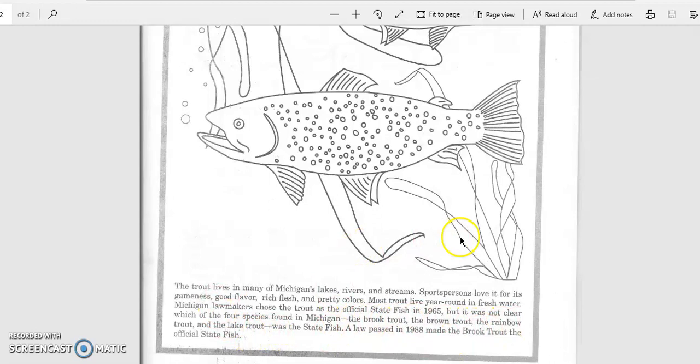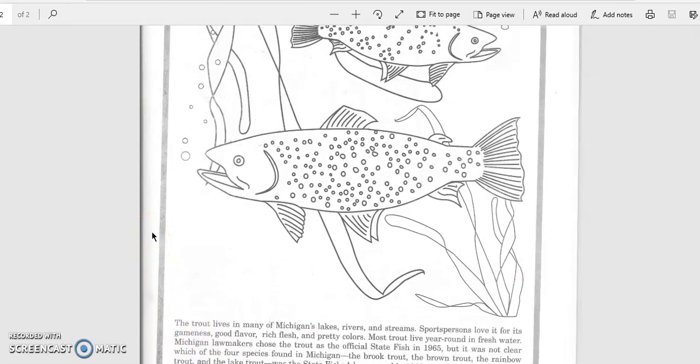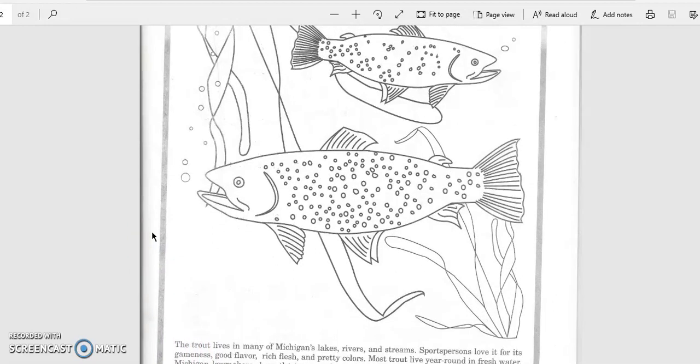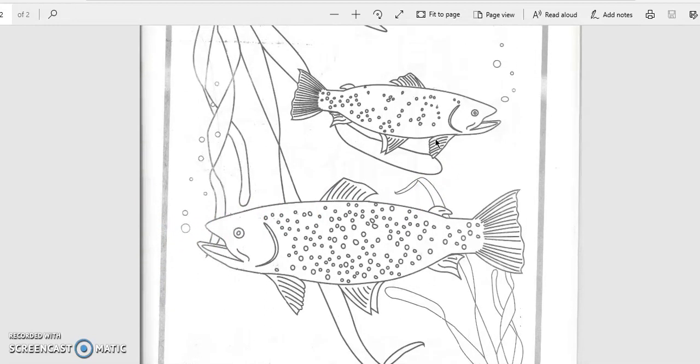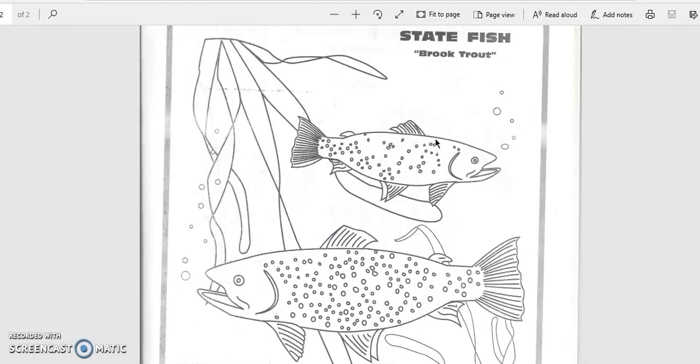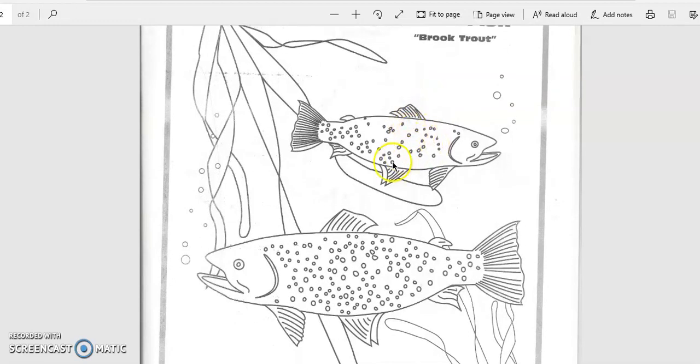And out of all four, this is the best to hunt. That's what that means for gameness. Hunters like to say it's kind of like a game to go hunting. Good flavor, rich flesh, and pretty colors. So if you remember us reading about this, the scales on them really glisten magnificently with a lot of different colors.